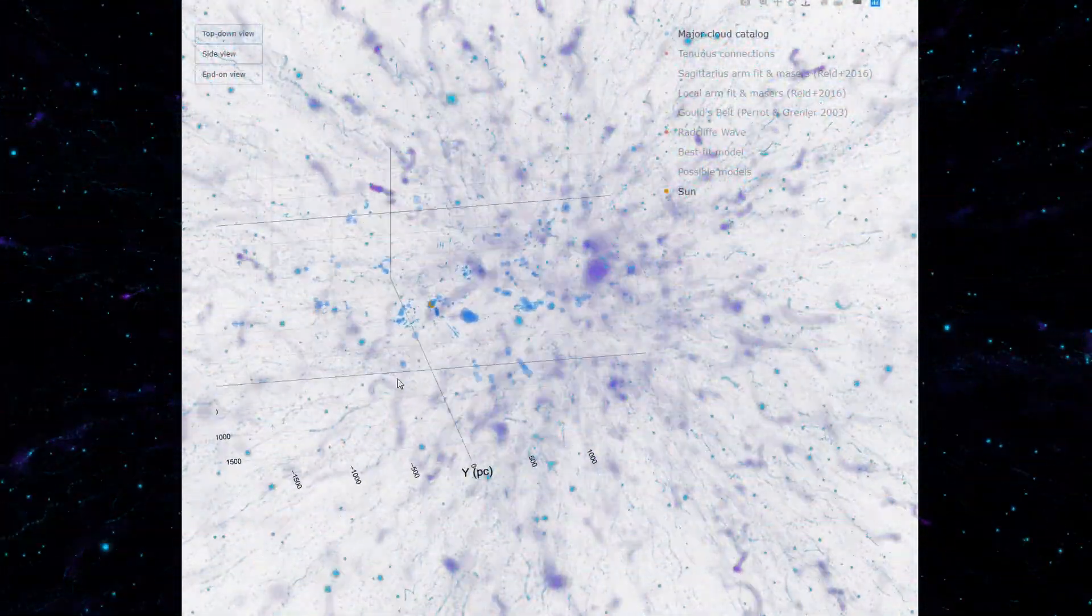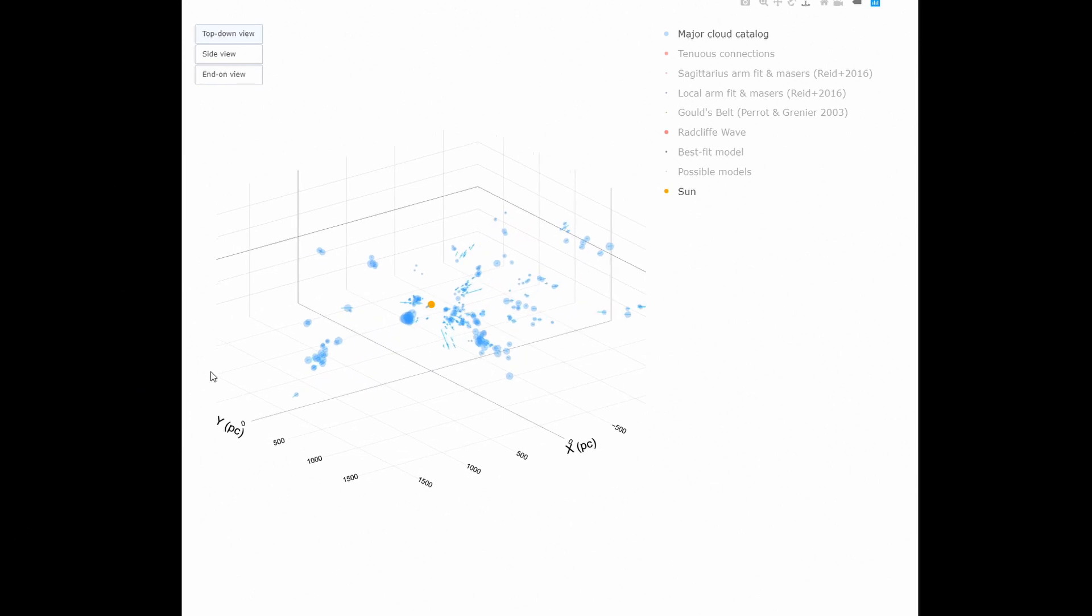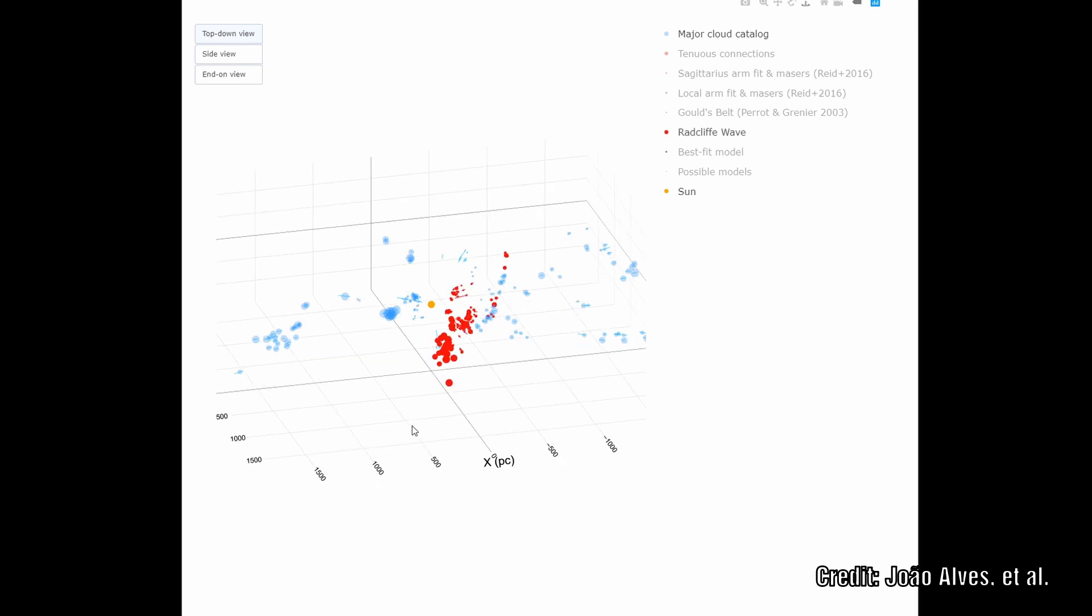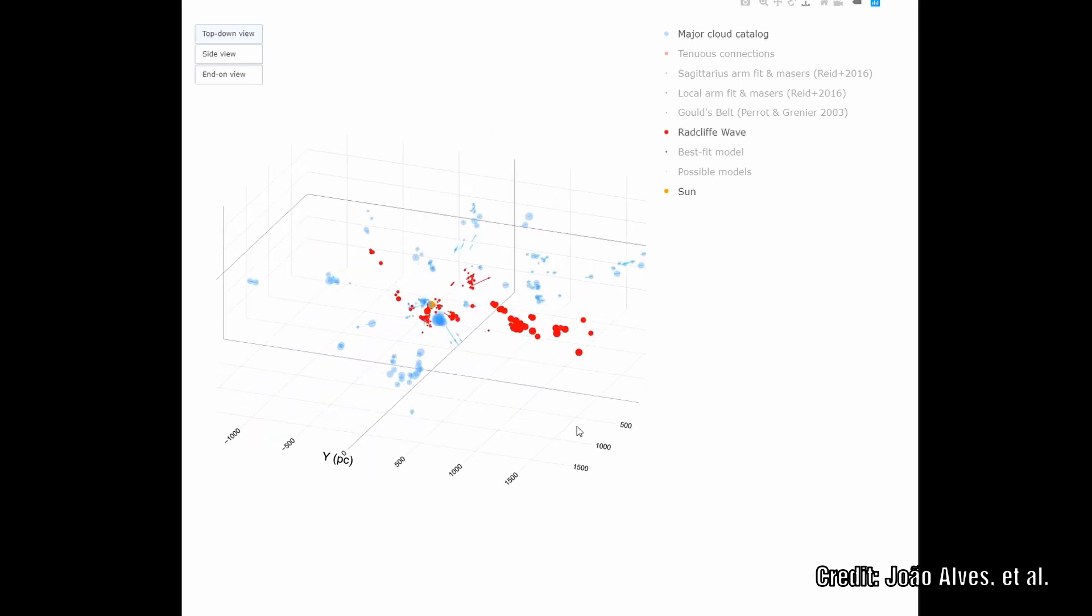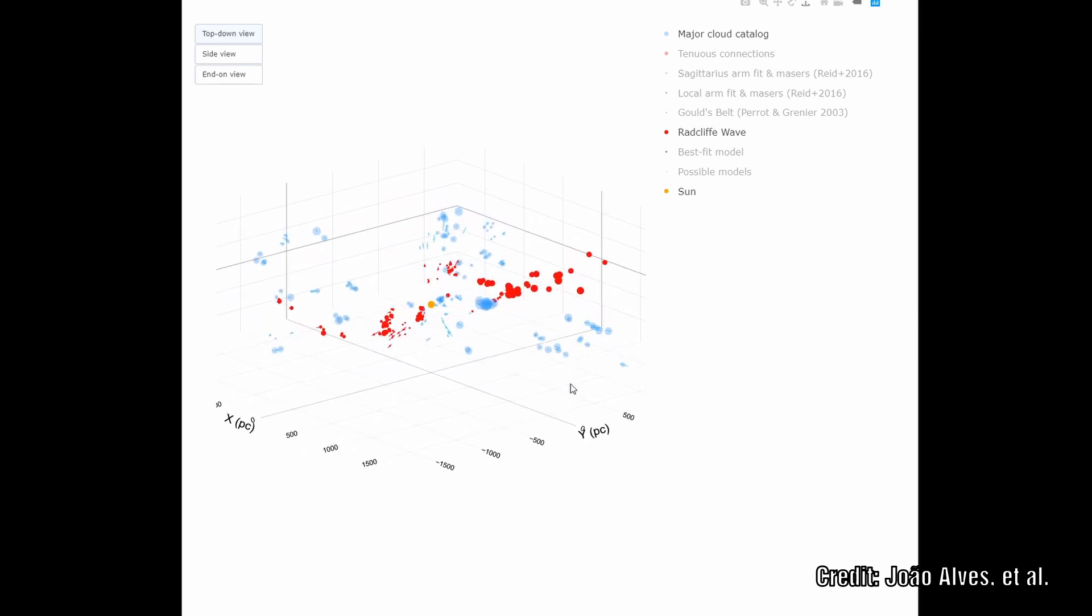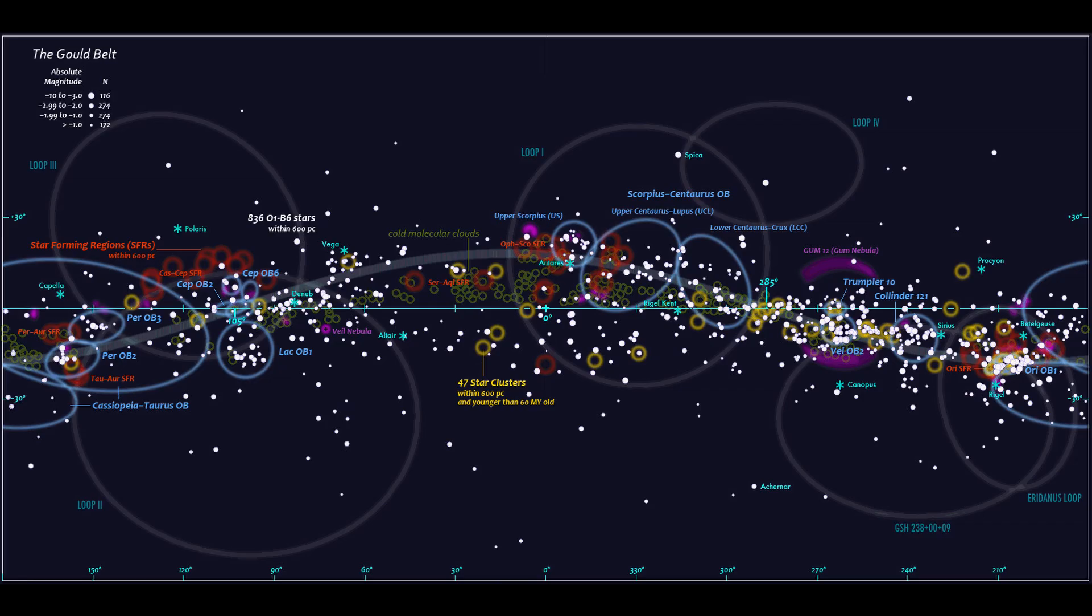While astronomers were mapping the distribution of vast clouds of dust and gas which pepper our galactic neighborhood, they stumbled across what they called a cosmic wave. These clouds are regions where new stars are believed to be born. We have previously covered the Gould Belt in the procession series, and this is a ring of stars which appears to be much bluer and is believed to be an active star forming region.